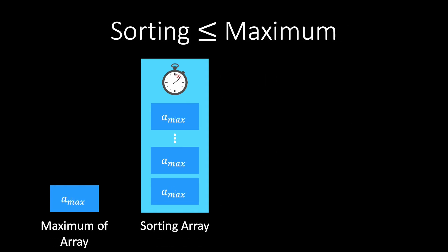Let's look at an example. Suppose we have an algorithm that lets us find the maximum element in an array. Then we can sort an array by repeatedly finding and removing the maximum of the array until no elements are left. Note that even if we can find the maximum of an array in polynomial time, sorting is not in P, because sorting is not a decision problem.